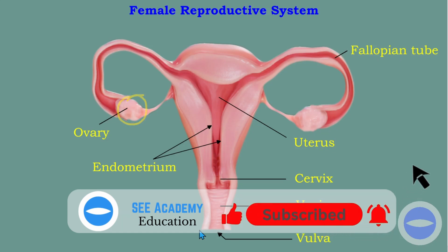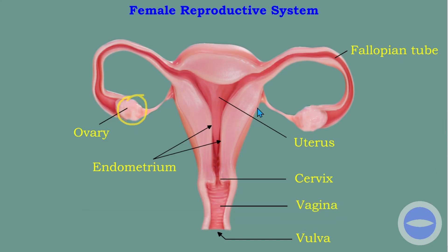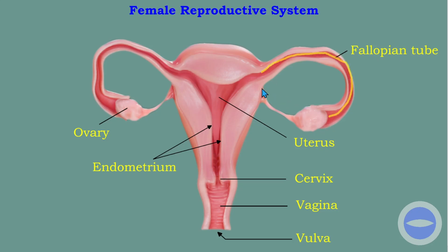Another part we have is the fallopian tubes. The fallopian tube is a tube connecting the ovary and the uterus. We have two fallopian tubes, one on each side.